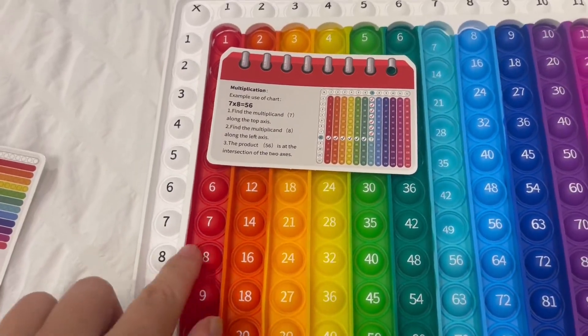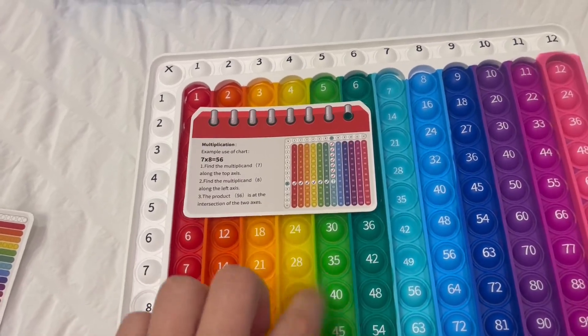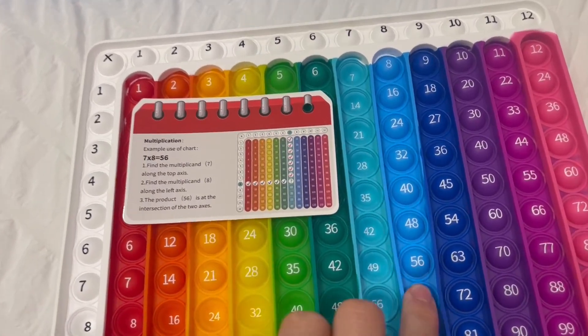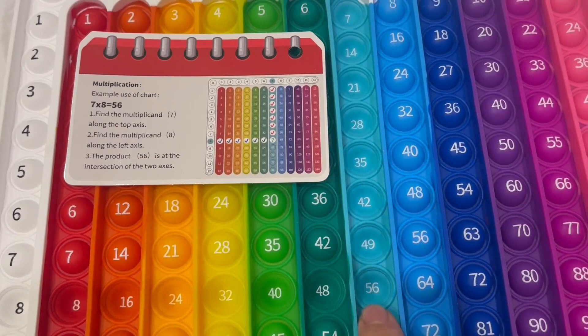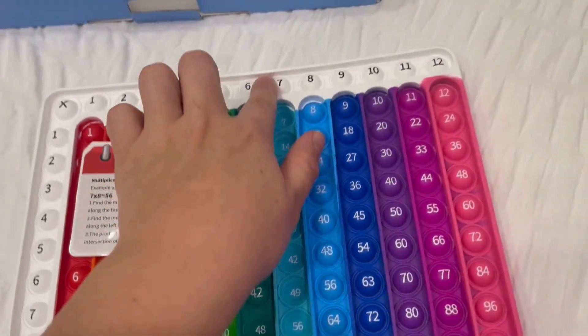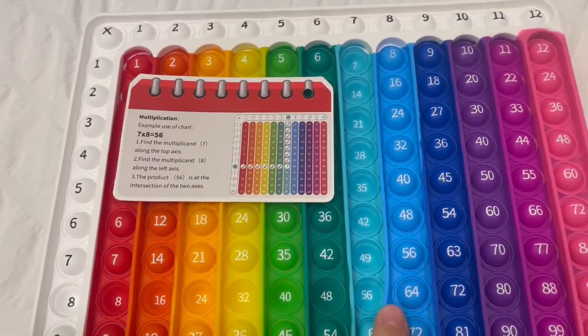And then if it's eight then you go to this side. Eight and then you go over. One, two, three, four, five, six, seven, eight. So look, fifty-six. So seven times eight is fifty-six.